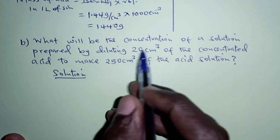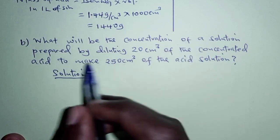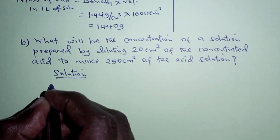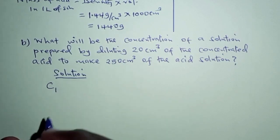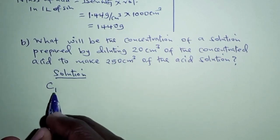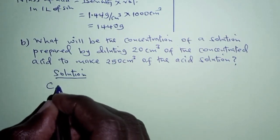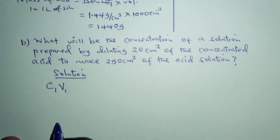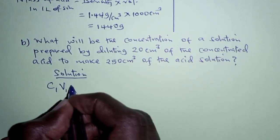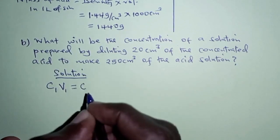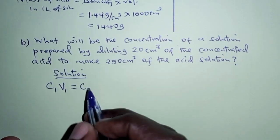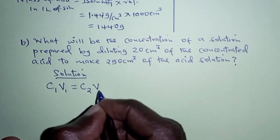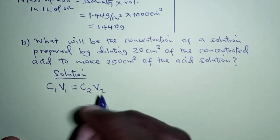In order to get the concentration of the solution, we consider this formula: the initial concentration of the concentrated acid times the initial volume of the concentrated acid equals the final concentration of the diluted solution times the final volume of the diluted solution.